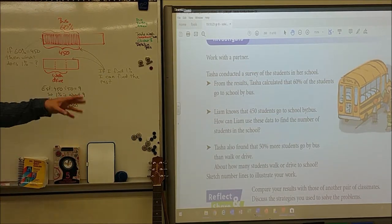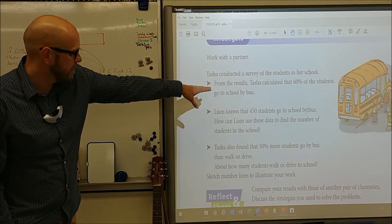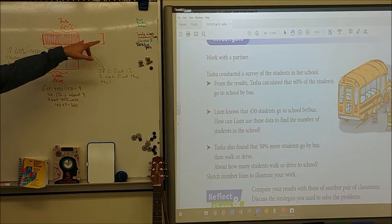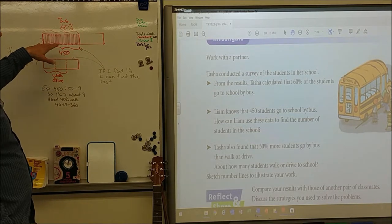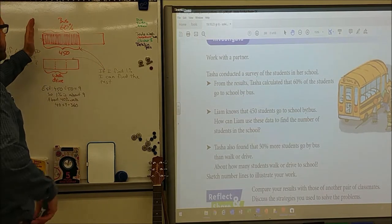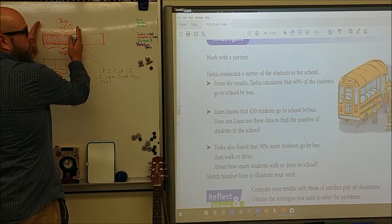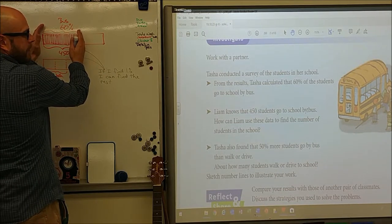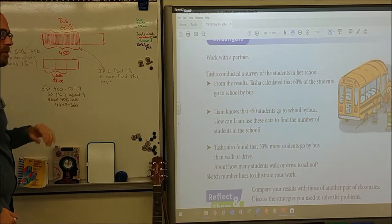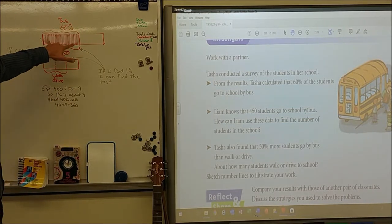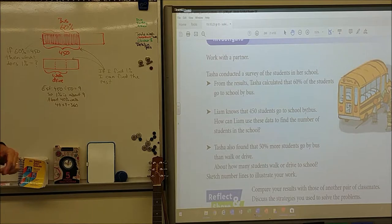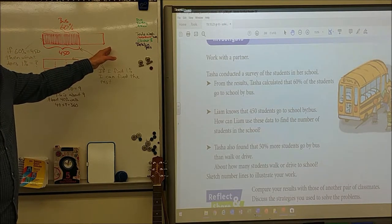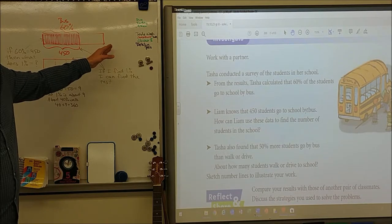So when we first looked at this, it said Tasha conducted a survey of students, 60% of the students. So I right away drew this thing here that's kind of like a number line, right? Like where you've got all the students, but then 450 of them go to school by bus. And that's 60% of them go by bus. So that means 60% equals 450 kids. So that means the population of the school is more than 450, right?